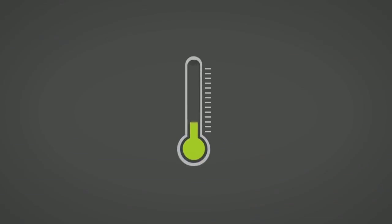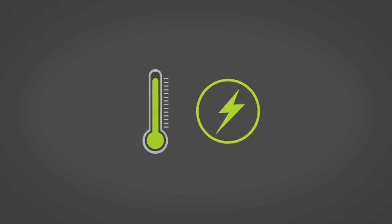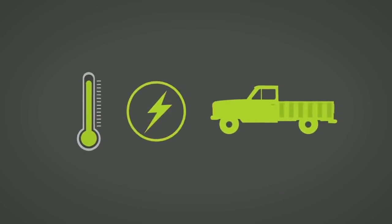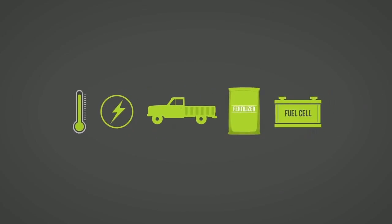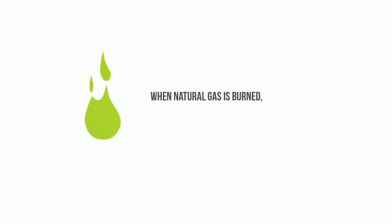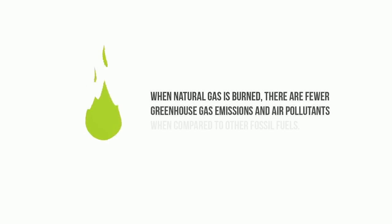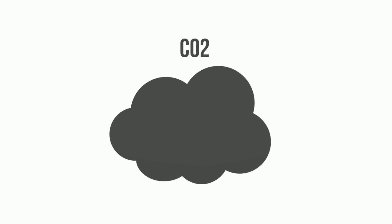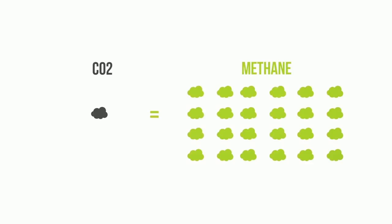Natural gas is mostly used for domestic or industrial heating and to generate electricity. It can also be compressed to fuel vehicles and as a feedstock for fertilizers, hydrogen fuel cells, and other chemical processes. When natural gas is burned, there are fewer greenhouse gas emissions compared to other fossil fuels. When used to produce electricity, it emits approximately half the carbon emissions of coal. Despite fewer emissions, natural gas is still a source of CO2. In addition, methane is a potent greenhouse gas, having nearly 24 times the impact of CO2.